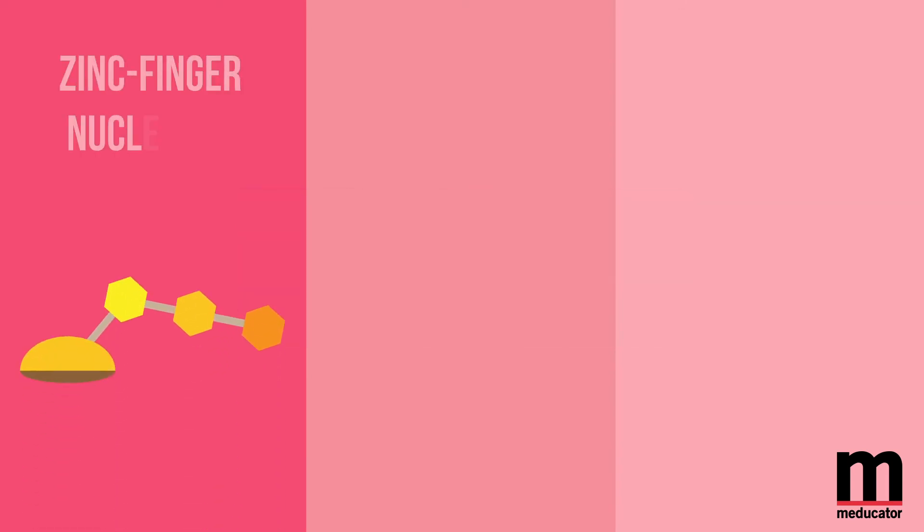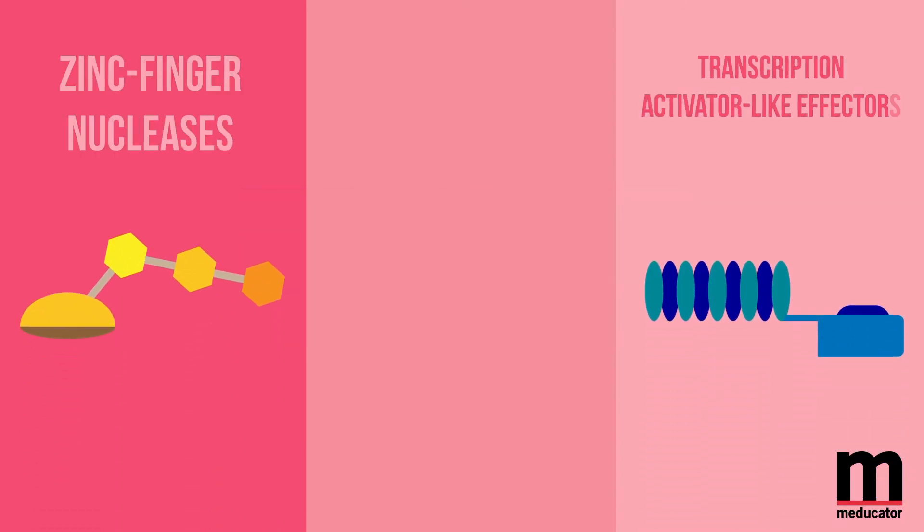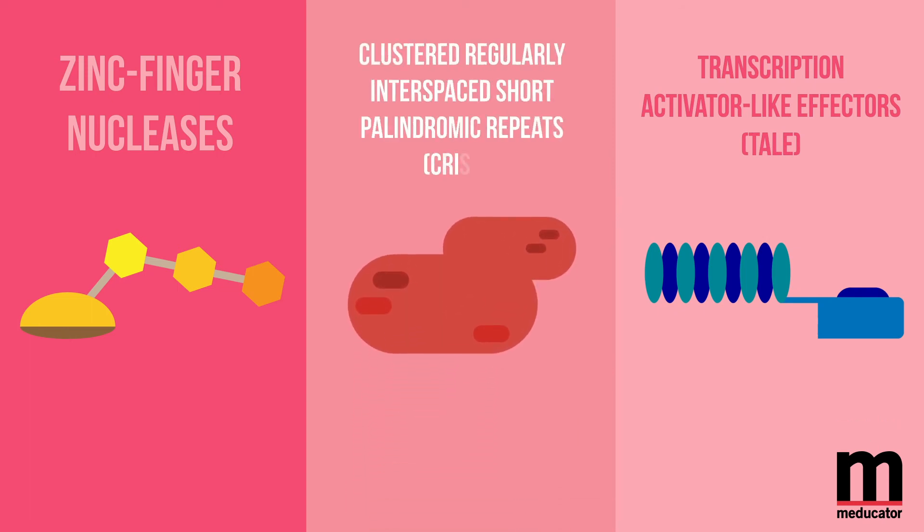Zinc finger nucleases, transcriptional activator-like effectors or TALE, and clustered regularly interspaced short palindromic repeats or CRISPR are a few examples. Most of the tools that we mentioned are able to alter DNA methylation patterns.